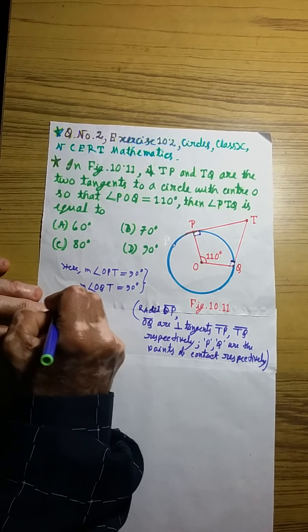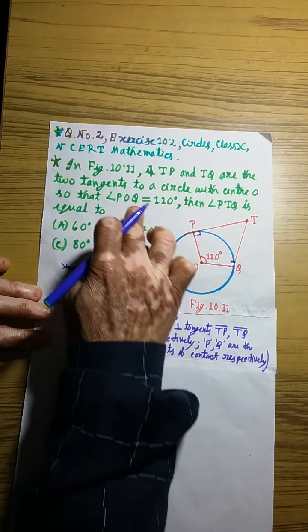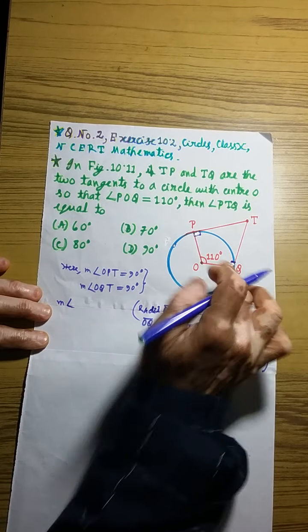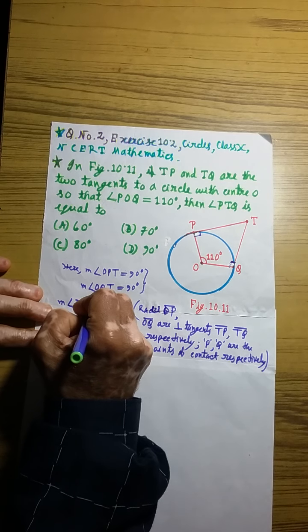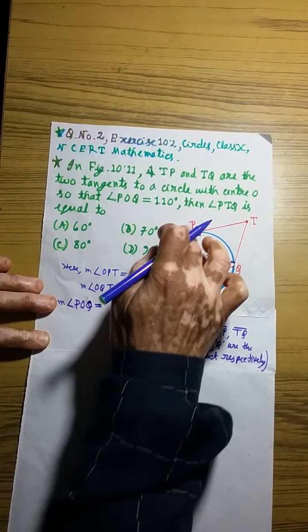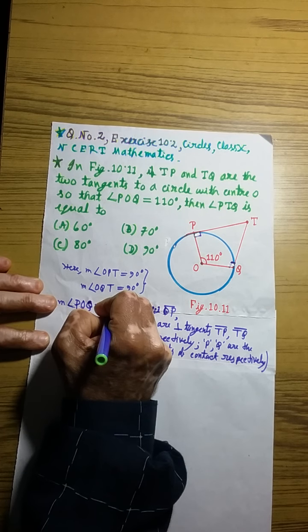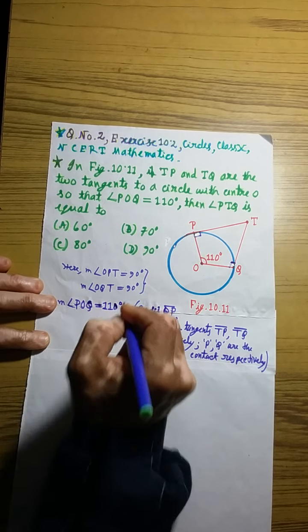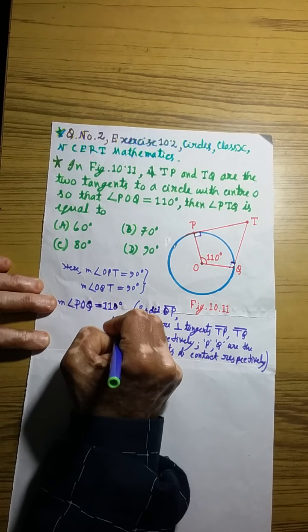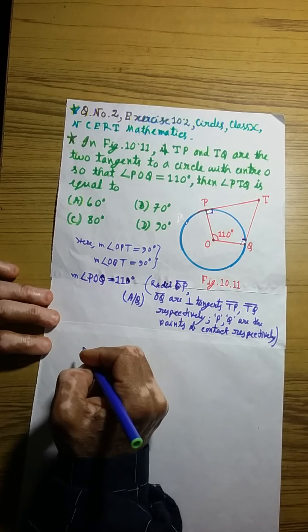After this, proceeding in this way: the measure of angle POQ is equal to 110 degrees, according to the question.